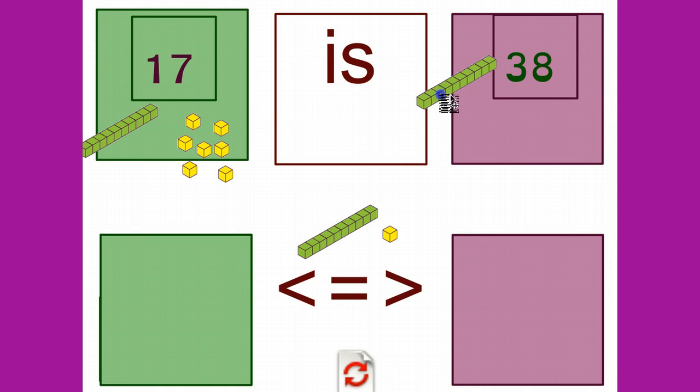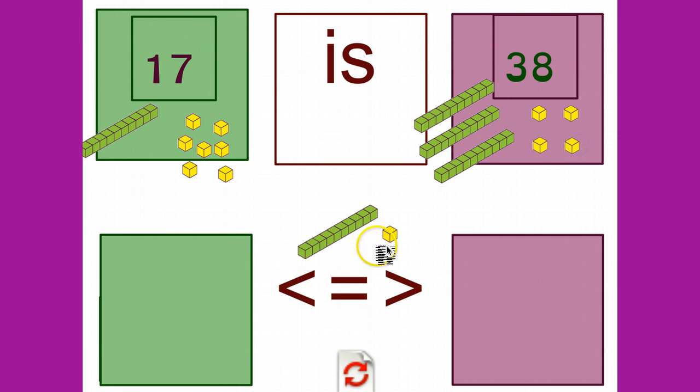Here we have 38, so I have 1, 2, 3 tens, and 8 ones. Counting 1, 2, 3, 4, 5, 6, 7, 8. Starting in the tens place,